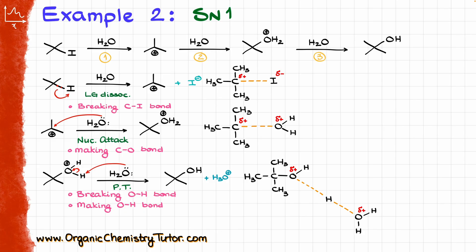Proton transfers are kind of like SN2 reactions in the sense of geometry — the bond angle between those two bonds should also be 180 degrees. I'm still drawing that correctly from the perspective of molecular orbital theory, showing the correct angles, although it does make the picture a little large and somewhat awkward. Some instructors are going to be very particular about that, so make sure you pay attention to those angles.